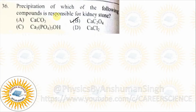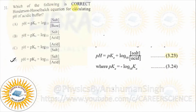Next question: precipitation of which compound is responsible for kidney stone — calcium oxalate. Next: which among the following is the correct Henderson-Hasselbalch equation for calculating pH of an acidic buffer? This equation — also keep the basic buffer equation in your book.